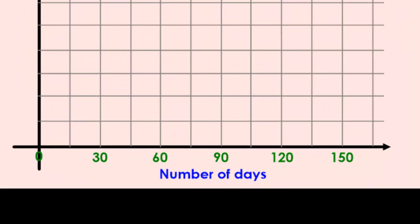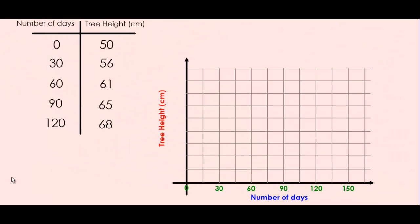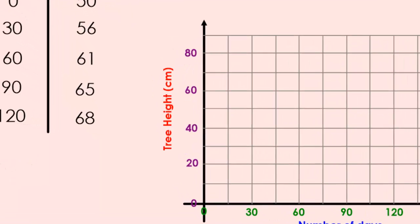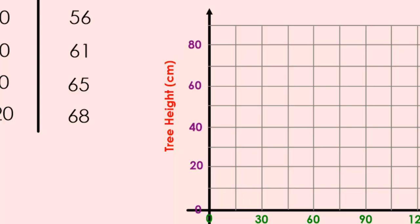Now let's consider the appropriate scale for the y-axis, or the total height. Our range of numbers for the y variable goes from 50 all the way to 68. Since we have 9 grid lines to work with going up the y-axis, we could safely say that our scale should go up by 10s. Notice how I only labeled every other grid line — it's not necessary to label every single grid line if you don't need to.